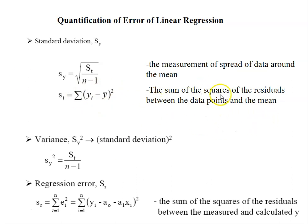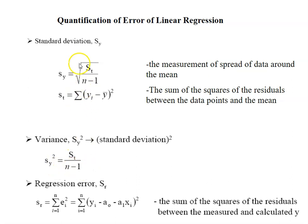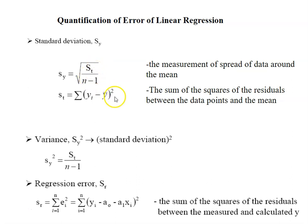St is actually the magnitude of the residual error associated with the dependent variable before you do the regression. Next, we have variance, which is the square of the standard deviation: variance equals st over n minus 1. You can just take off the square root. Variance is not so informative — standard deviation is what people are usually more interested in.